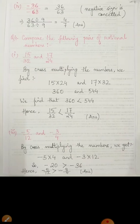Now, question number 3, part 4: the question is minus 36 upon minus 63. If we cancel both the negative signs — since both numerator and denominator have a negative sign, they get cancelled and we get a positive rational number. Now, 36 and 63 are both multiples of 9. If we divide 9 from both the numerator and denominator, we get the answer in standard form, that is, 4 by 7.